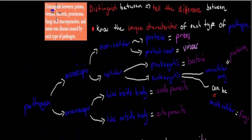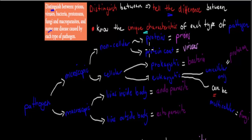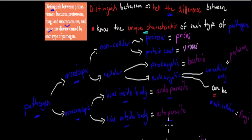The next dot point is 'distinguish between' — which means tell the difference between — prions, viruses, bacteria, protozoa, fungi, and macroparasites, and name one disease caused by each. There are two overall classifications: microscopic and macroscopic. Macroscopic pathogens are macroparasites, which are either endoparasites living in us (like tapeworms) or ectoparasites living on us (like ticks).